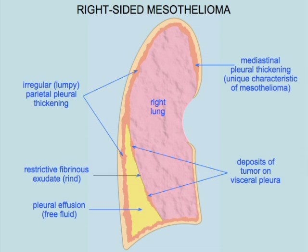We do have a slide on the screen now, which I'm pointing to, which shows that it develops as an irregular, lumpy thickening of this lining membrane all the way around the inside of the chest cavity. And eventually, deposits of tumor occur on the surface of the lung as well. And if there is fluid there, which we call pleural effusion, then parts of the effusion in the form of proteins can become deposited on the surface of the lung as what we call a fibrinous exudate or a rind develops on the surface of the lung, which, in addition to these deposits of tumor, further restricts the movement of the lung.